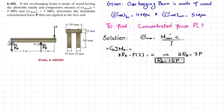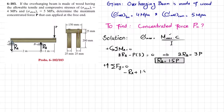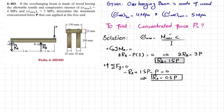We can find R_A using the equilibrium condition: sum of all forces in the Y direction equals zero. So minus R_A plus R_B minus P equals zero. Substituting R_B as 1.5P: minus R_A plus 1.5P minus P equals zero, giving R_A equal to 0.5P. Now we have both R_A and R_B and can draw the shear force and bending moment diagram.